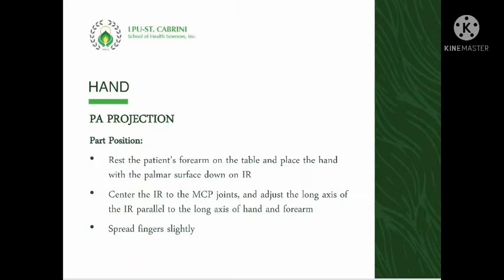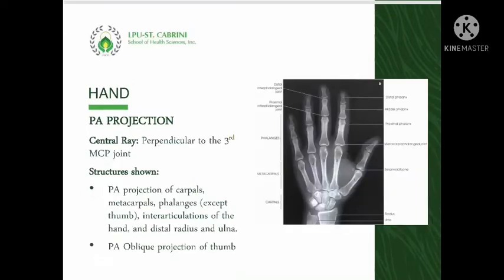As for the part position, place the affected hand with the palmar surface down, and place the metacarpal phalangeal joints in the center of the image receptor, then separate the digits slightly. The central ray is directed perpendicularly to the third metacarpal phalangeal joint.